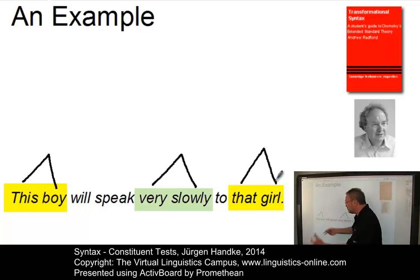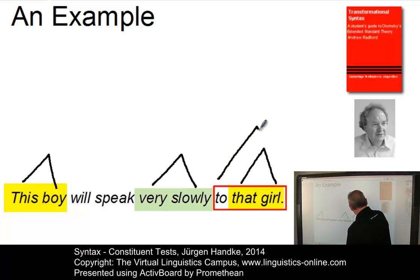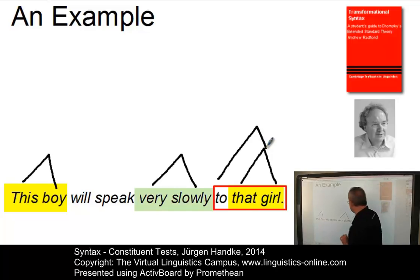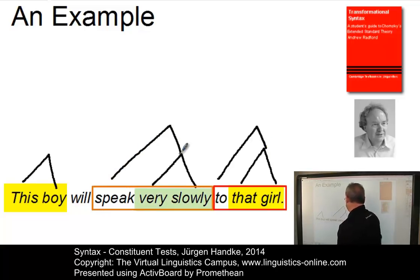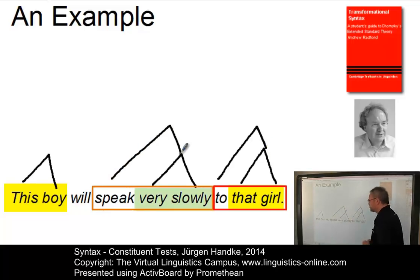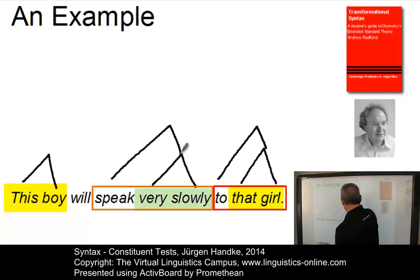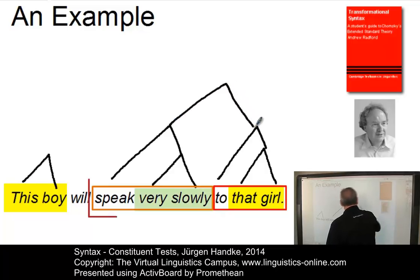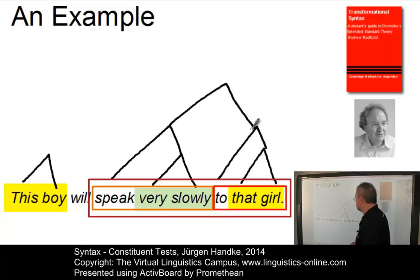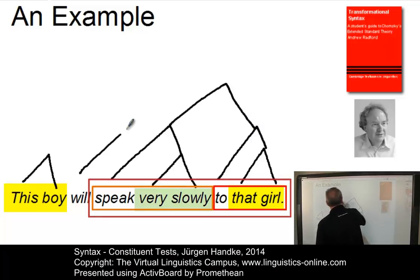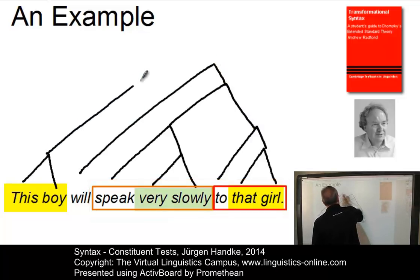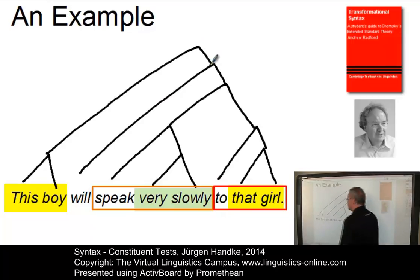And we will also share the opinion that 'to' and 'that girl' somehow build another constituent. And eventually we will intuitively understand that 'speak very slowly' and 'speak and very slowly' belong together. At a later stage we will group 'speak very slowly' and 'to that girl' into another constituent, and eventually we will come up with this sort of hierarchical structure which displays the entire sentence.